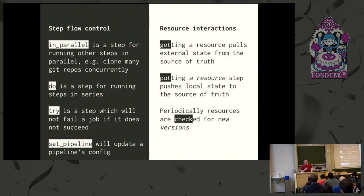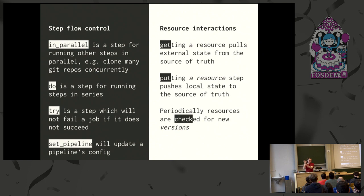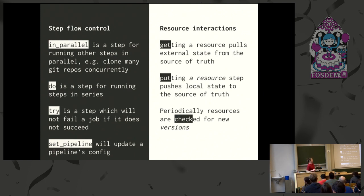The flow control within a job lets you download things in parallel, then do steps in series, and maybe execute code where failure doesn't matter. You can get Concourse to update other Concourse pipelines dynamically, so a pipeline can coordinate other pipelines — which is really neat. Resources externalize state, and the operations associated with state are: in the background Concourse checks for resources as they're updated, getting resources gives you that state, and putting resources sends local state out to the external store.